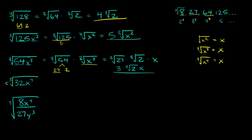Here's the negative cube root of 32x to the seventh. We're going to split up the number and the variable: the cube root of 32 times the cube root of x to the seventh. Now 32 is not a perfect cube, but we can break it down using a perfect cube — specifically 8. So we break it down into 8 times 4: the cube root of 8 times the cube root of 4.